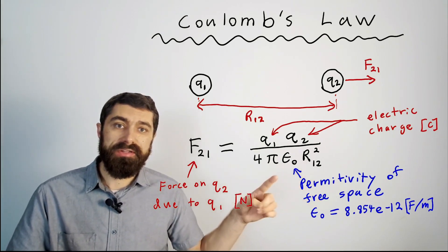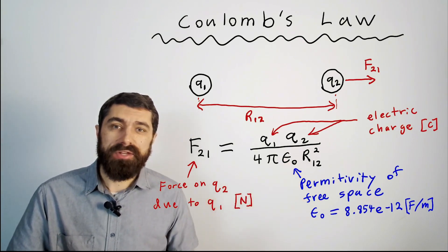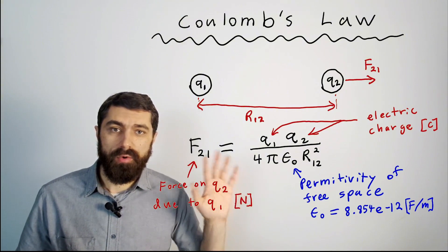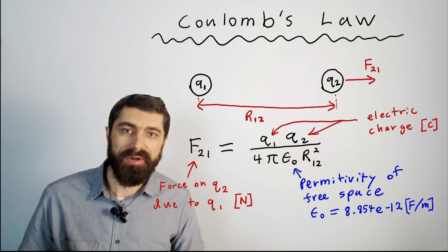Basically you take the product of the two charges in Coulombs and divide it by this whole expression here. Epsilon zero is the permittivity of free space. We'll talk more about that but for now I just want us to work with this basic formula and get used to how the mathematics works.